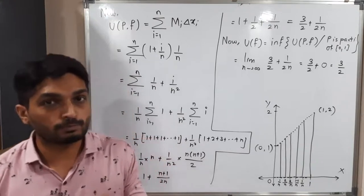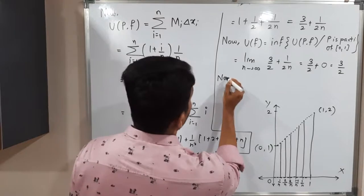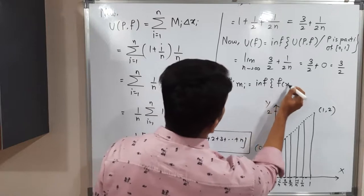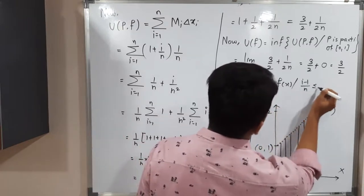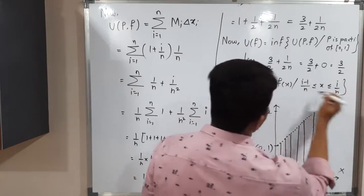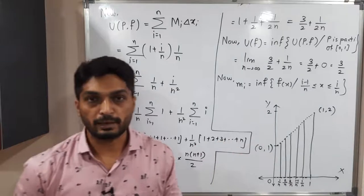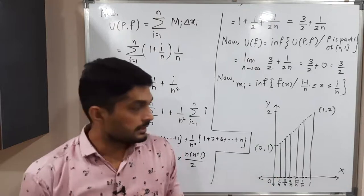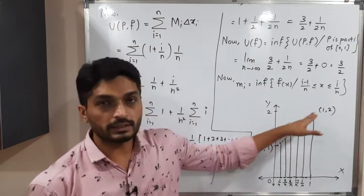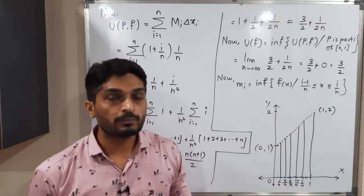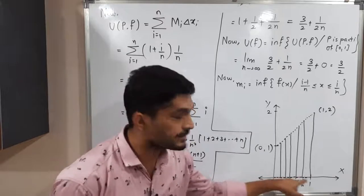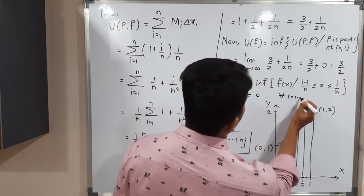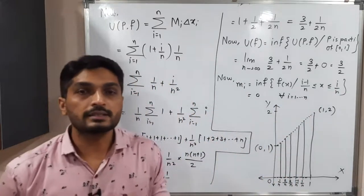Now we calculate the lower integral. First we find m_i, defined as the infimum of f(x) for (i−1)/n ≤ x ≤ i/n. The function takes either the value from 1 + x or the value 0. Since the function takes 0 for irrational numbers, its minimum value is obviously 0. So m_i = 0 for all i from 1 to n.